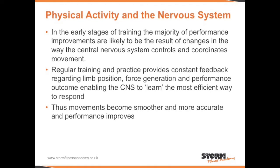Physical activity and the nervous system. In the early stages of training, the majority of performance improvements are likely to be the result of changes in the way the central nervous system controls and coordinates movement. Regular training and practice provides constant feedback regarding limb position, force generation, and performance outcome, enabling the CNS to learn the most efficient way to respond. Thus movements become smoother, more accurate, and performance improves.